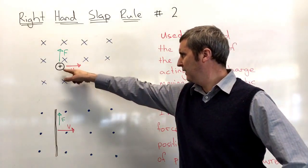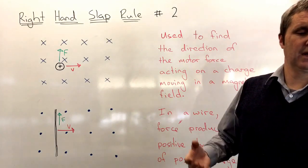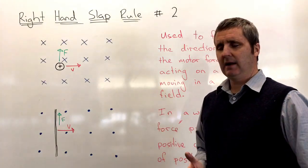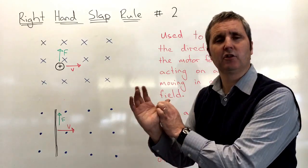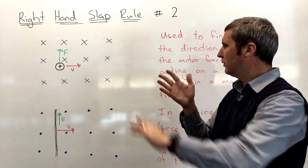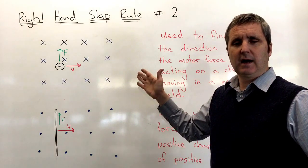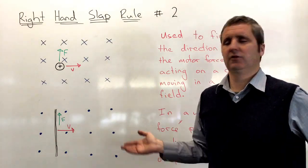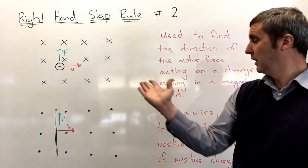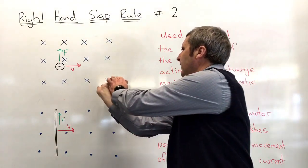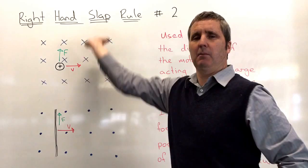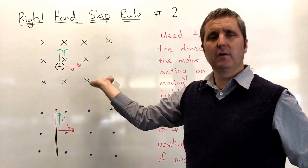Let's look at this charged particle — it could be a proton or a bigger particle with a positive charge. Using the right-hand slap rule, the thumb represents the direction of the positive charge, fingers represent the direction of the magnetic field, and the slap direction shows which way the force acts. Lining up fingers going into the board and thumb pointing this way, the force is slapped upwards.